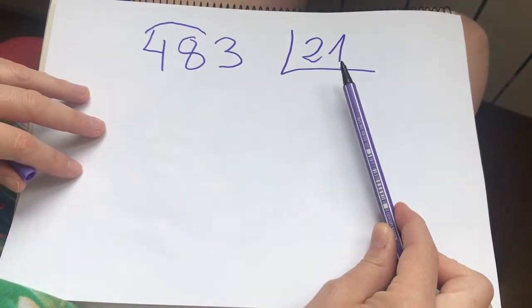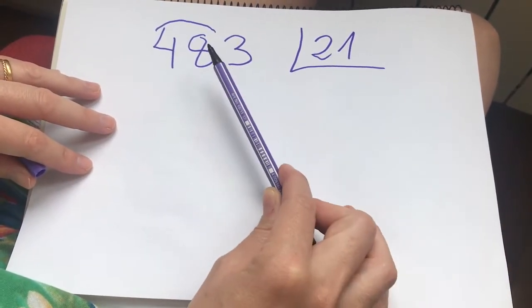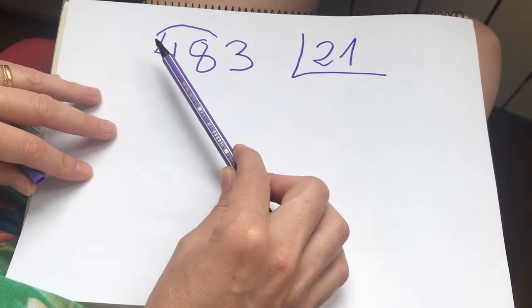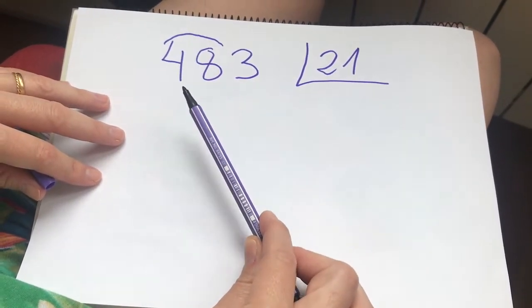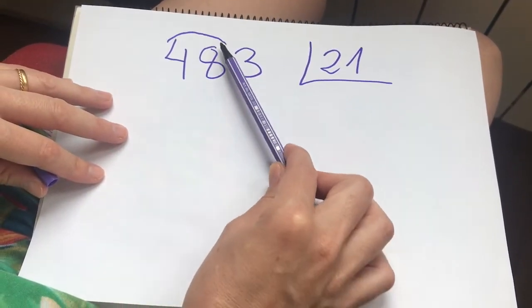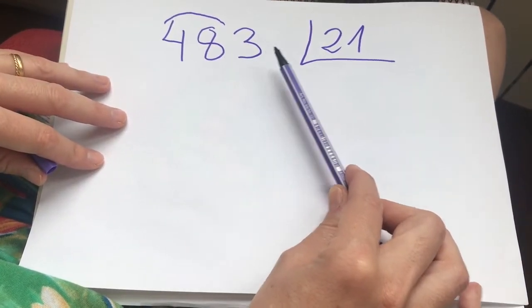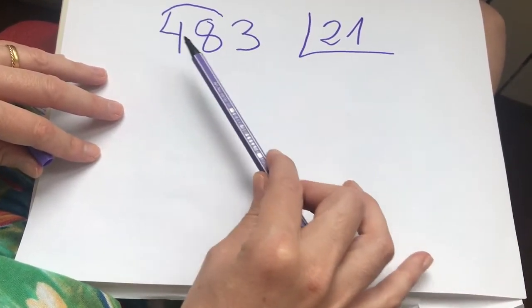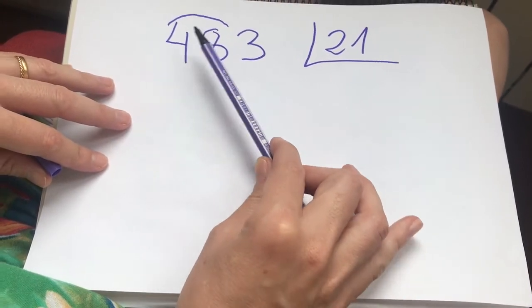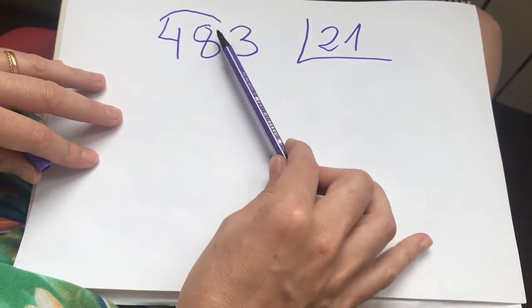Aquí tenemos dos cifras. Es lo primero que nos fijábamos. Y entonces cogíamos aquí el mismo número de cifras. Segunda cosa que nos fijábamos era que este número que he cogido sea mayor que este, porque voy a empezar a dividir a trocitos. Si tengo un número muy largo no puedo dividir todo de golpe, tengo que ir a trocitos. Entonces el primer trocito que he cogido es 48.